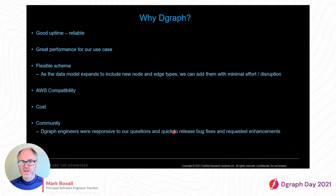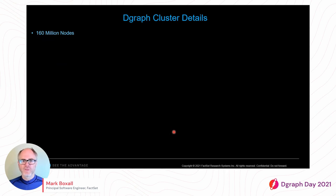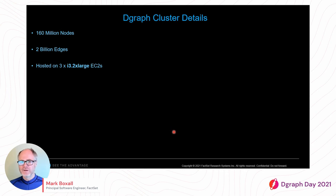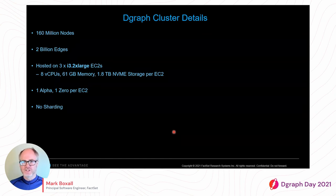Last but not least, the community: right from the very start, the DGraph engineers had been really responsive to our questions and very quick to release bug fixes and any enhancements we requested. We decided to go with DGraph, finished the data model, started loading data, and ended up with 160 million nodes and 2 billion edges — including both value edges and real relationships. We're currently hosting on three medium-sized EC2s with 8 vCPUs, 61 gigs of memory, and 1.8 terabytes of storage, running one alpha and one zero per EC2. We don't currently use any sharding — we were able to comfortably fit that on one EC2 — but it's nice to know that is a possibility in the future if our dataset grows significantly.